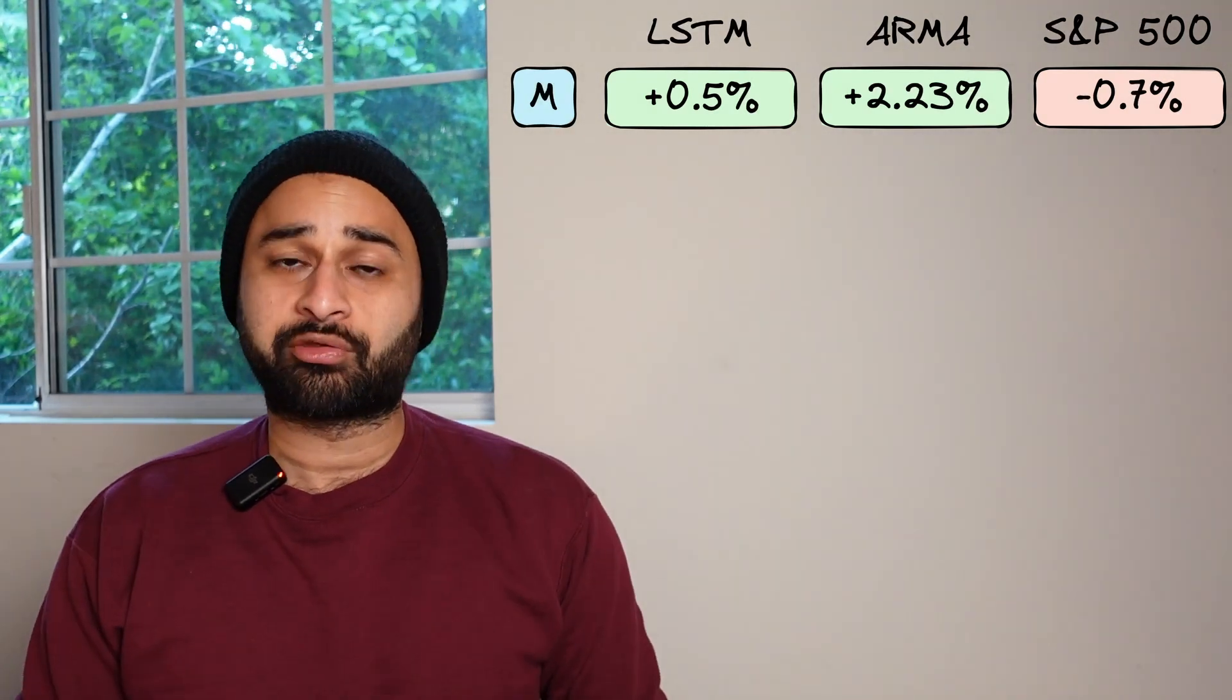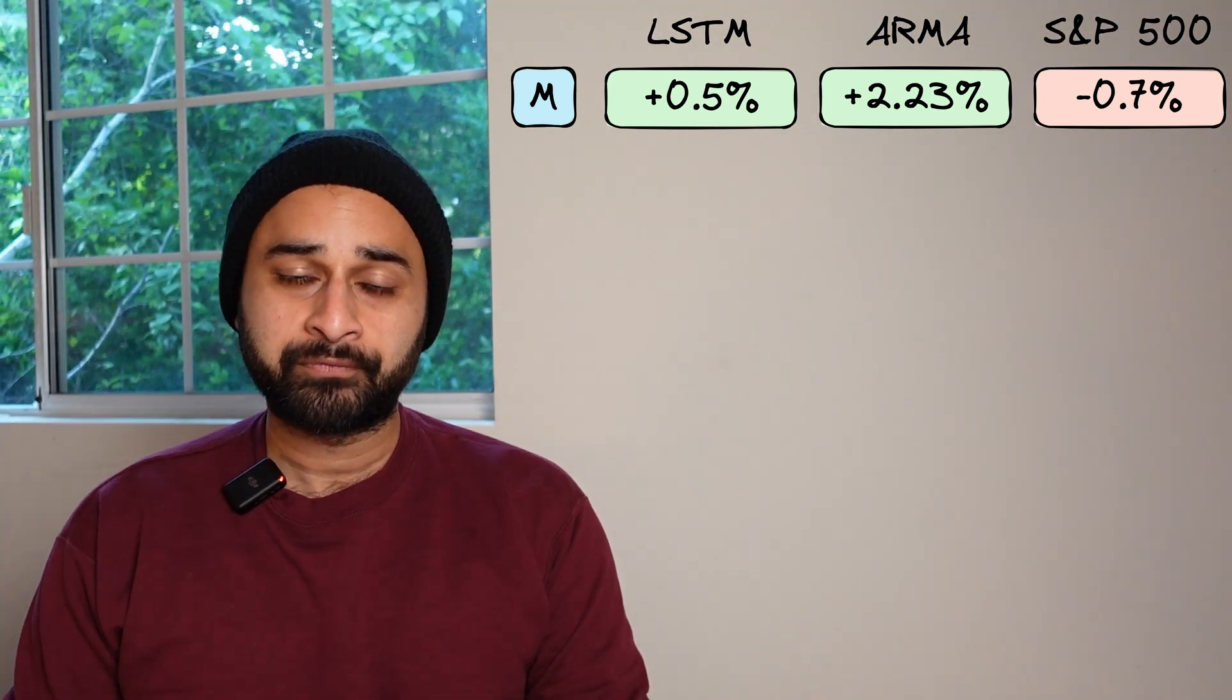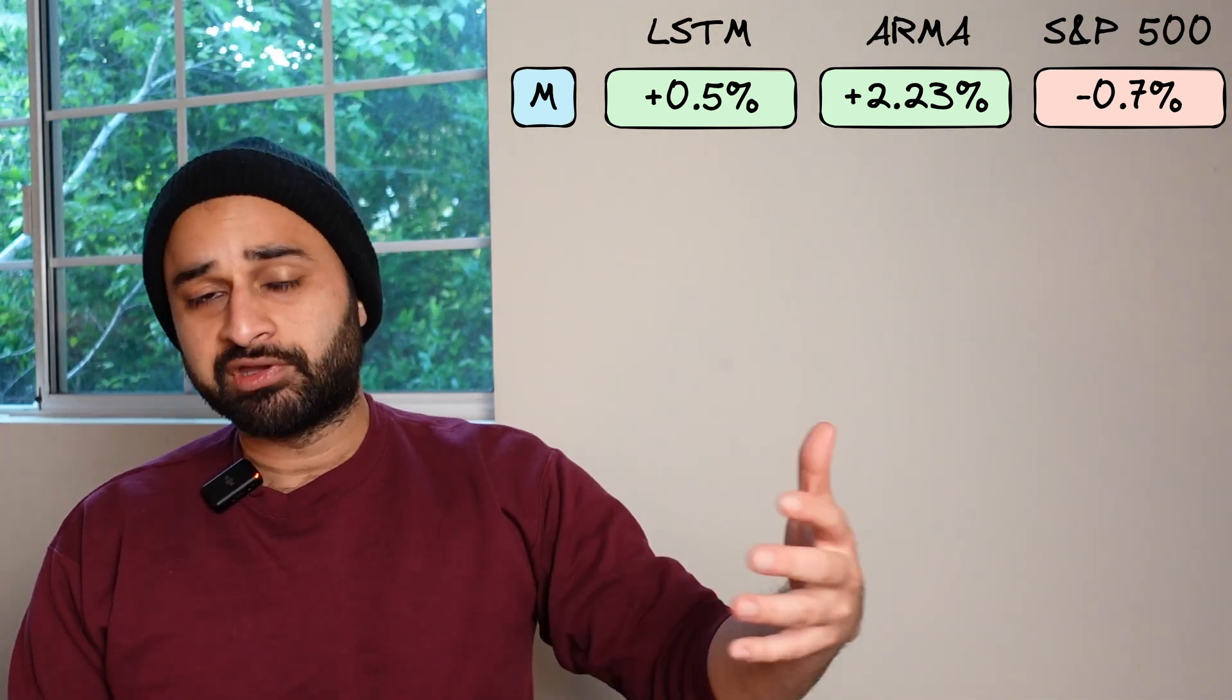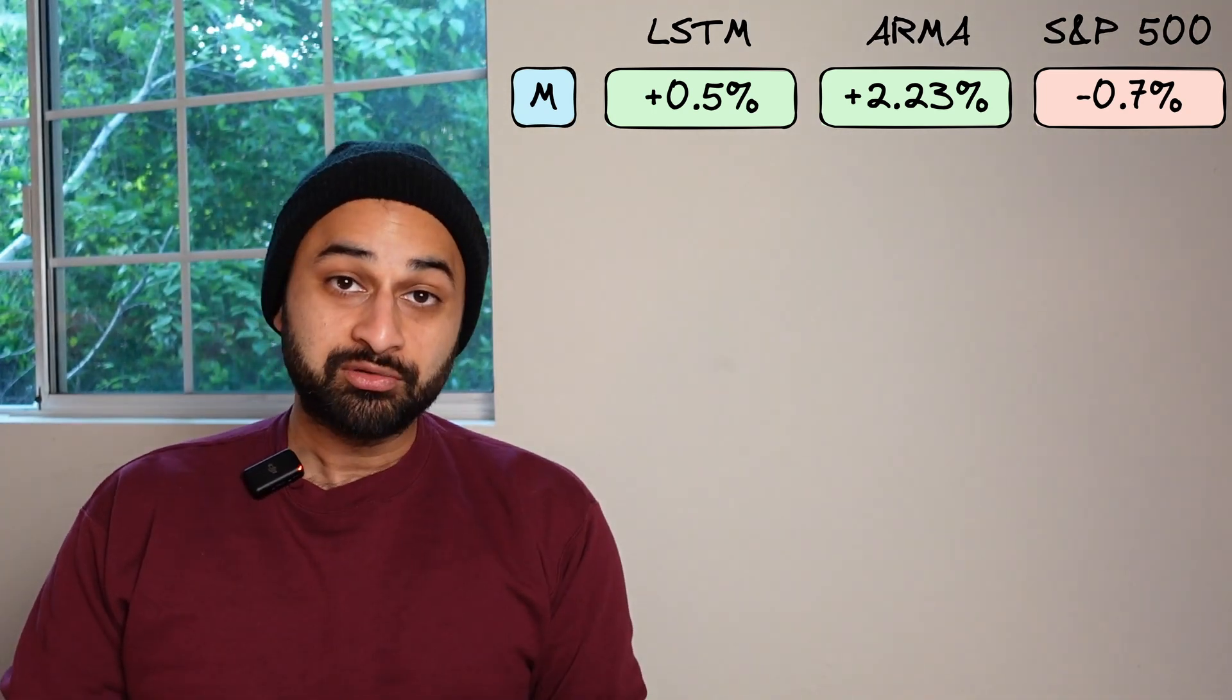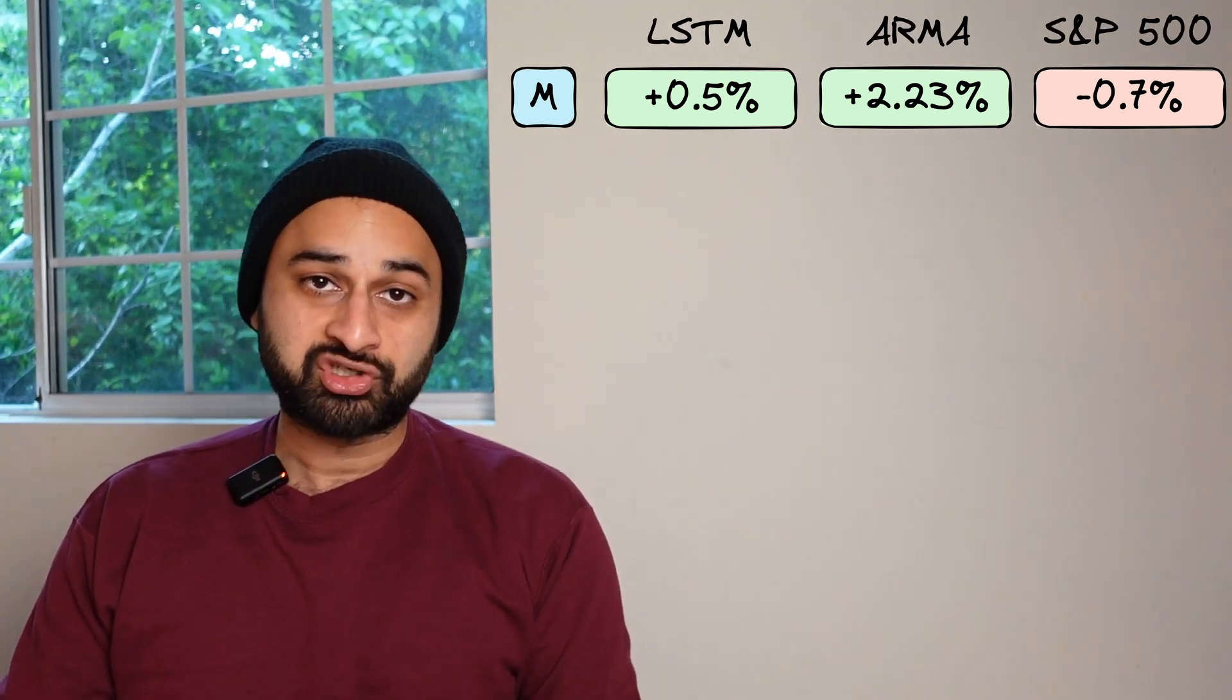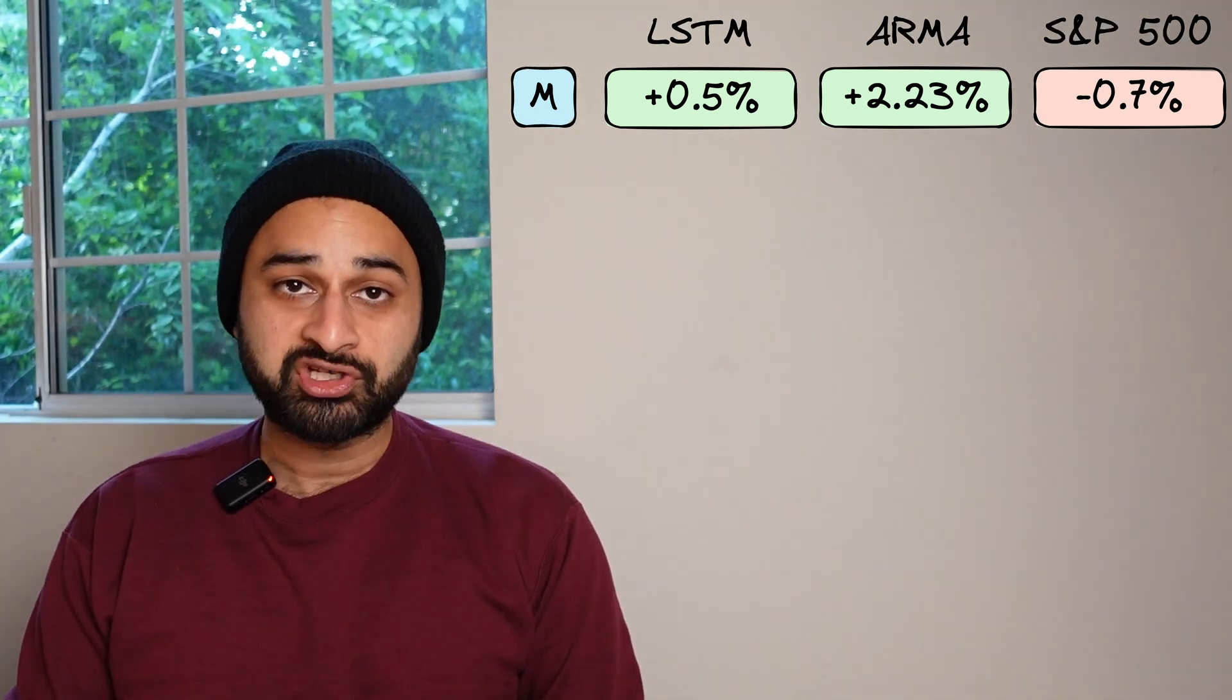So let's get into Monday. So on Monday we see the ARMA model comes out swinging. We get a massive 2.23% return from the ARMA model on Monday. Now the LSTM model is also giving us a positive return, but it's smaller, it's 0.5%. But the good news is both of our models have demolished the market model for today. If we had bought and sold the S&P 500 today, we actually would have lost 0.7%.